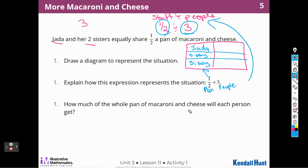Explain how this expression represents one half divided by three. So I have one half of the pan divided by three people, just like we wrote above, just like we've been doing, stuff divided by people. How much of the whole pan of macaroni and cheese will each person get? Well, if I divided the whole pan by half and then by thirds, we have one piece. Jada's piece is one out of one, two, three, four, five, six. So everybody would get one sixth of the pan.